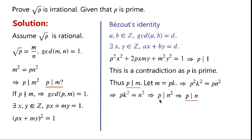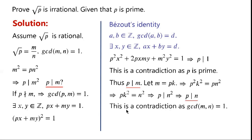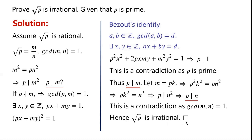We just proved that if p divides n squared and p is prime, then p divides n. Since p divides m and p divides n, this is a contradiction, as the greatest common divisor of m and n is 1. Hence, root p is irrational. The proof is now complete.